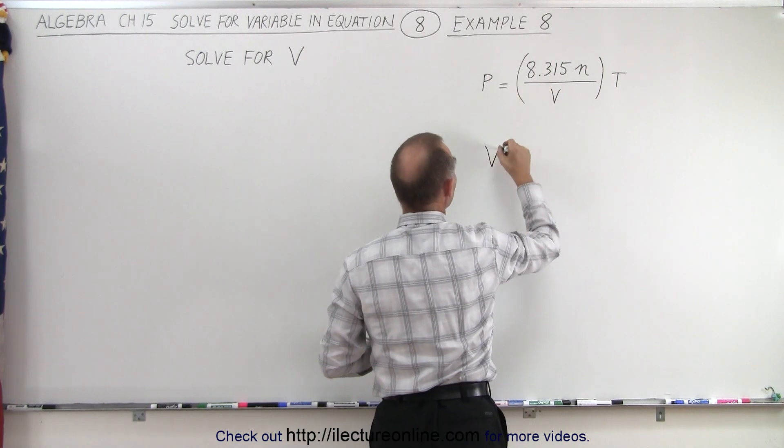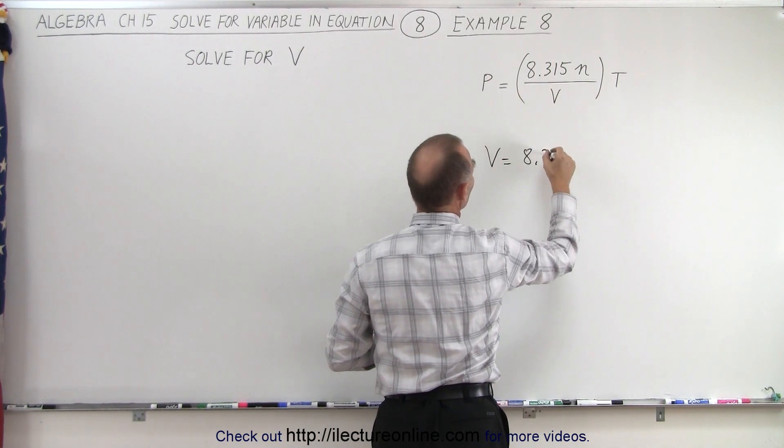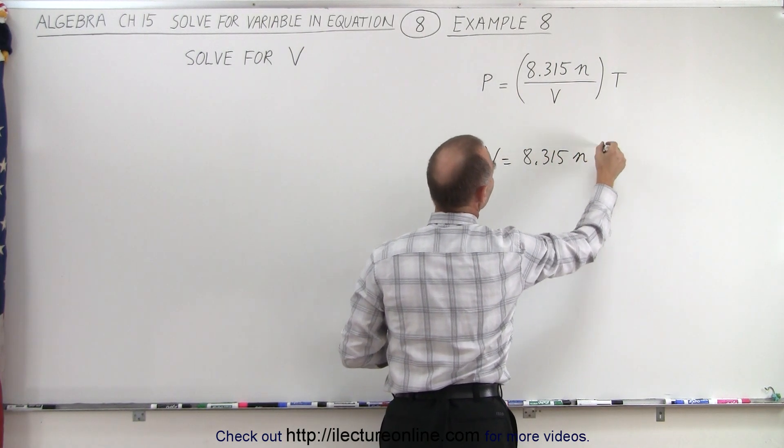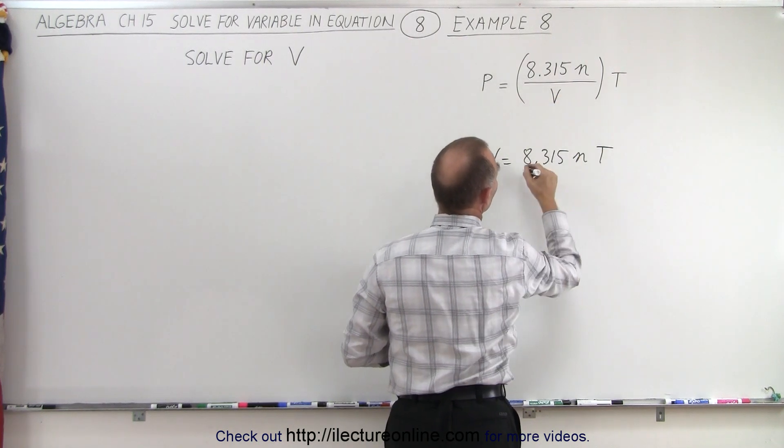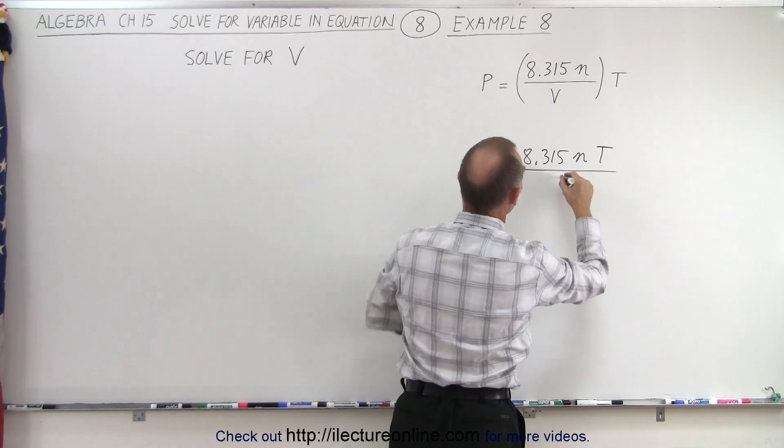So moving the v up here, we have v is equal to 8.315n times T. We don't really need those parentheses, and then we divide by the p that we brought down.